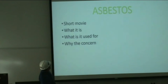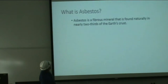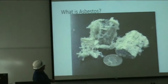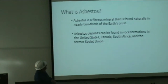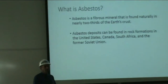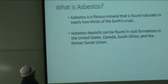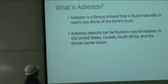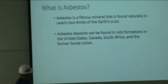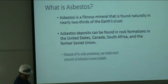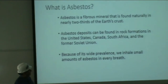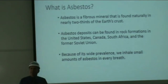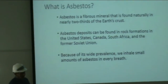I'm going to first tell you what it is, what it's used for, and why it's a concern. Asbestos is a fibrous mineral that is found naturally in nearly two-thirds of the Earth's crust. Its deposits can be found in rock formations in the United States, Canada, South Africa, and the former Soviet Union. Because of its wide prevalence, we inhale small amounts in every breath.